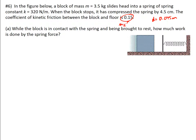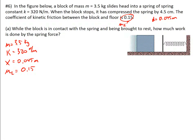While the block is in contact with the spring and being brought to rest, how much work is being done by the spring force? First, I'm going to write out all of our givens. So we know the mass is 3.5 kilograms, spring constant is 320 newtons per meter, x — the distance of compression — is 0.045 meters, and mu-k is 0.15.